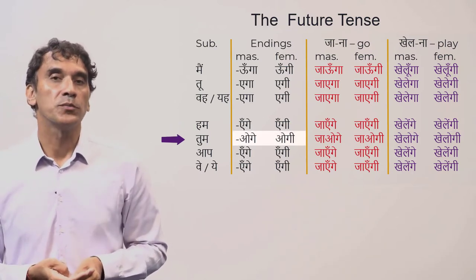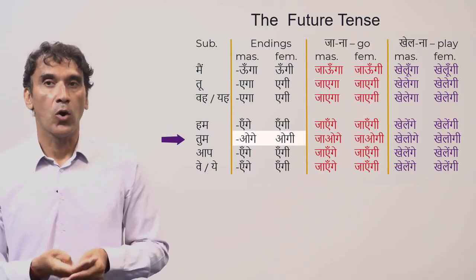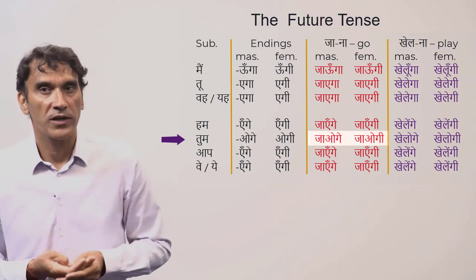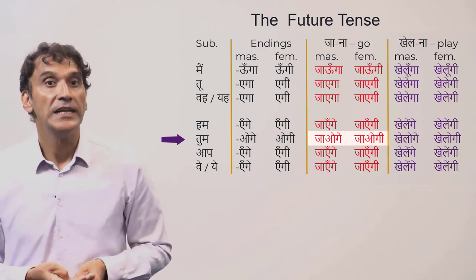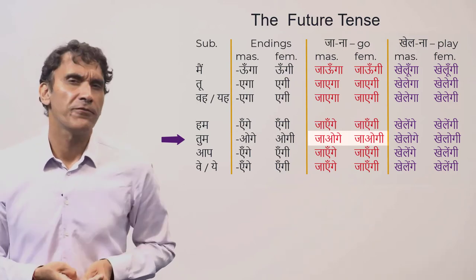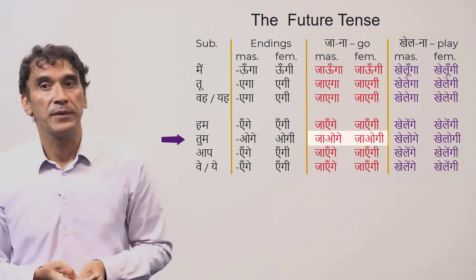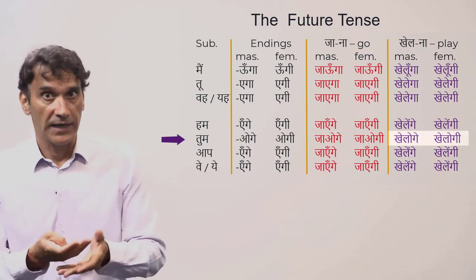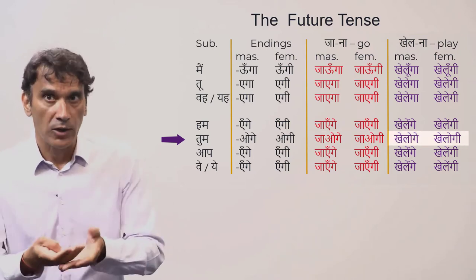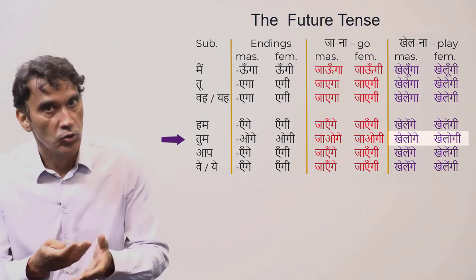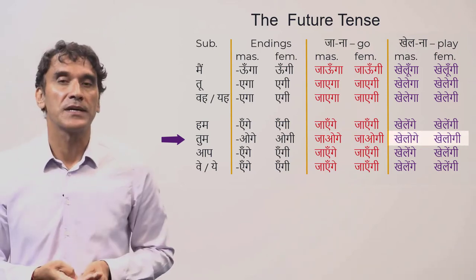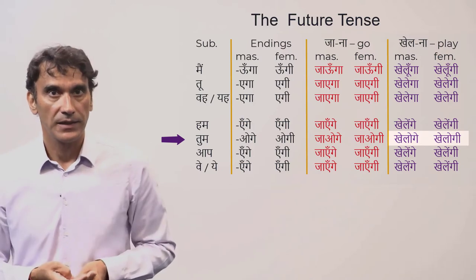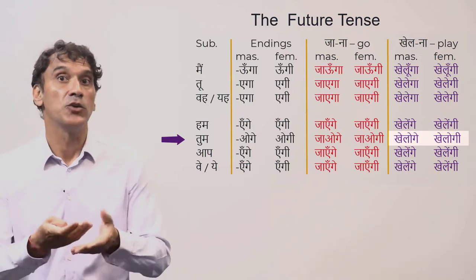For 'tum', the endings are 'oge' (masculine) and 'ogi' (feminine). So 'tum jaoge' (masculine) and 'tum jaogi' (feminine) both translate to 'you will go.' For 'khelna': 'tum kheloge' and 'tum khelogi' — 'you will play.'